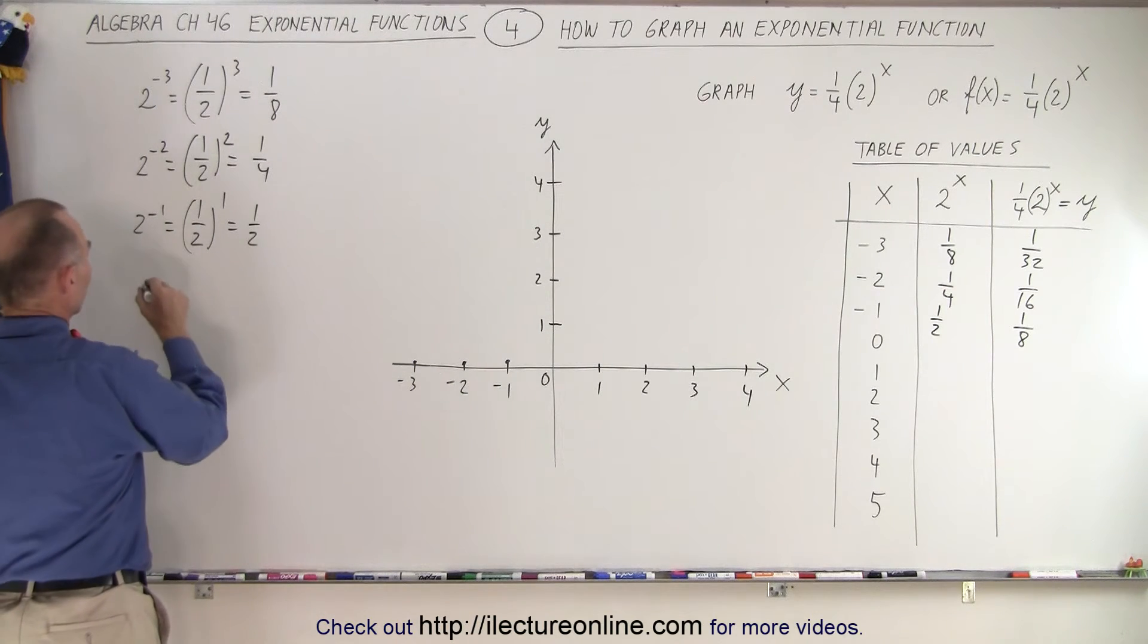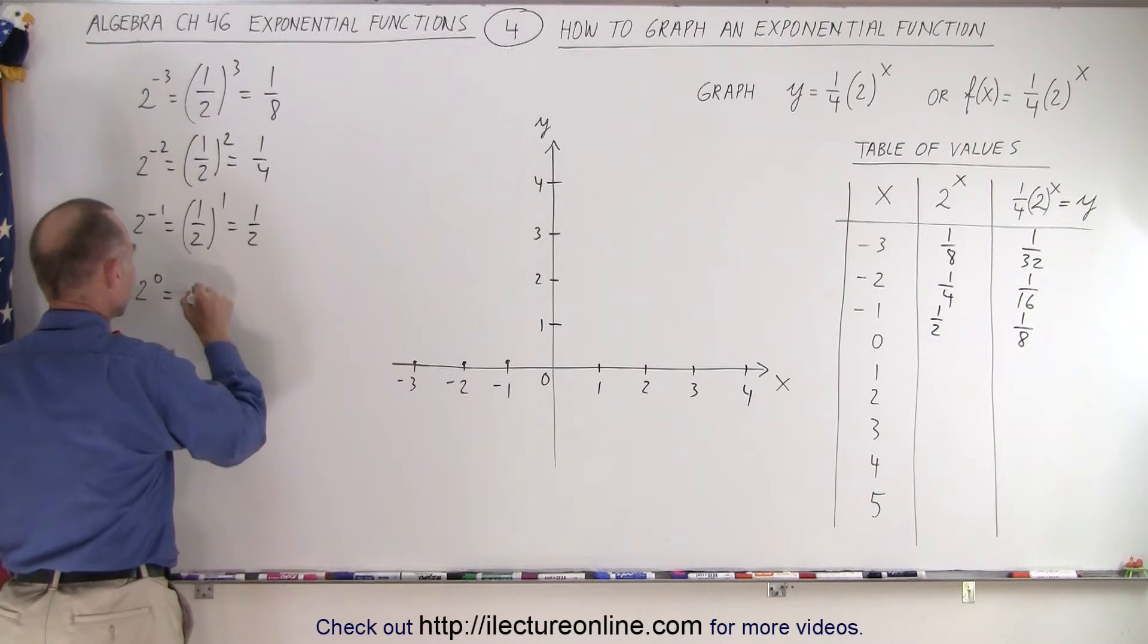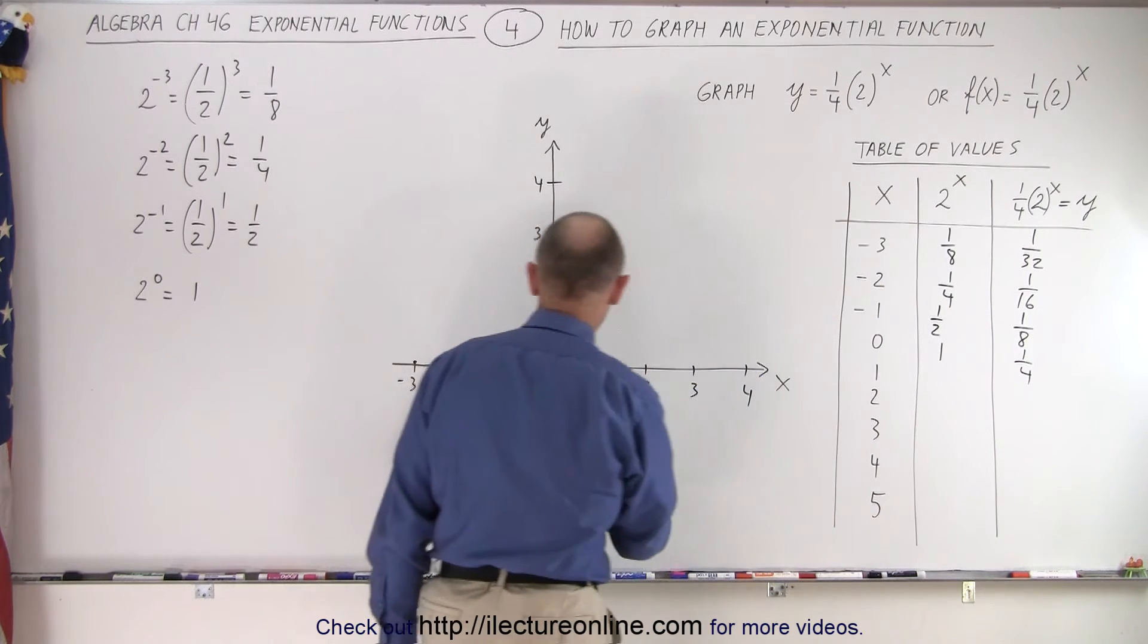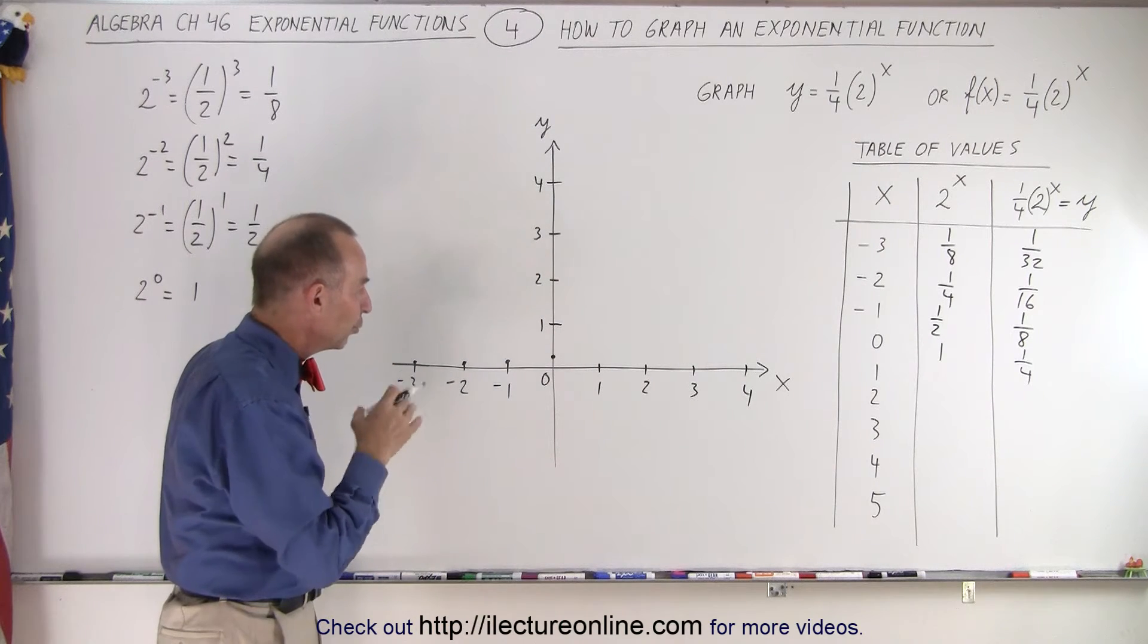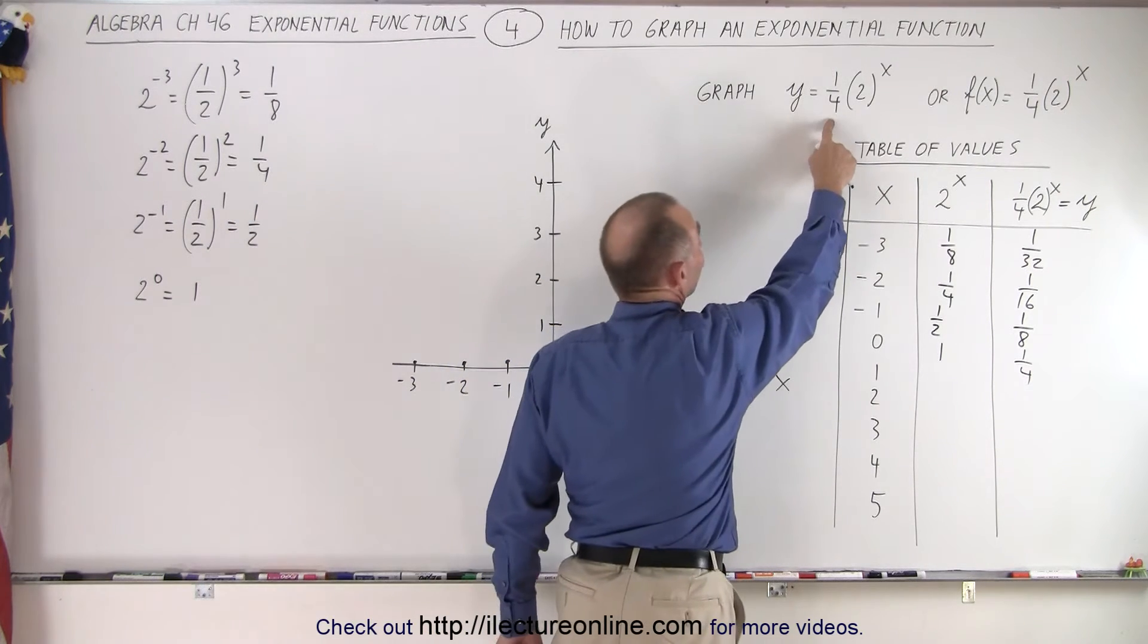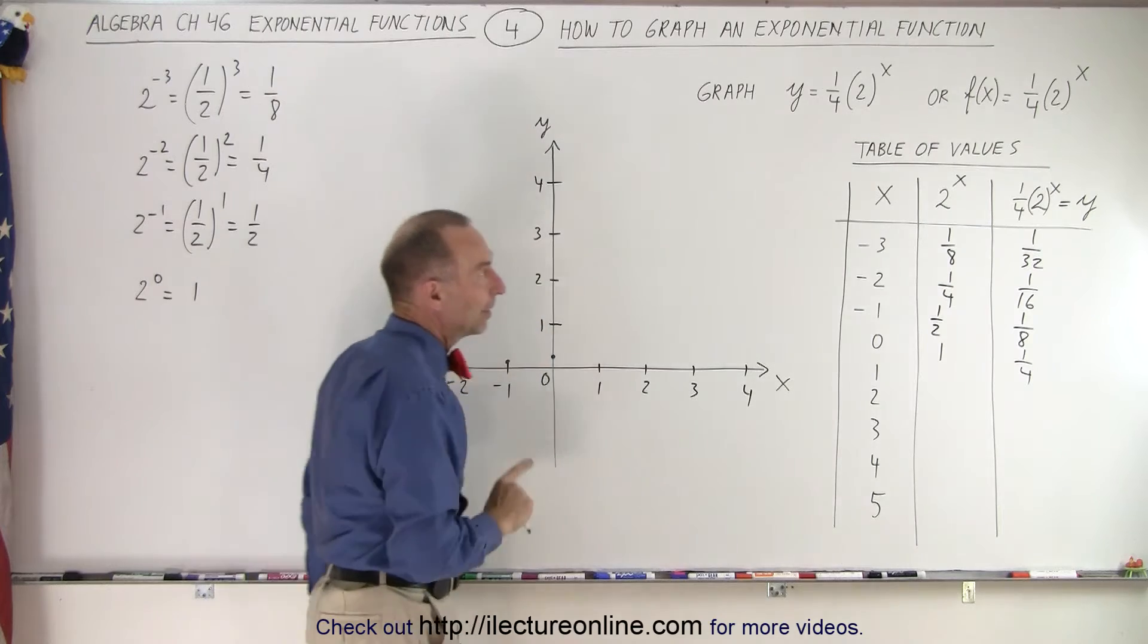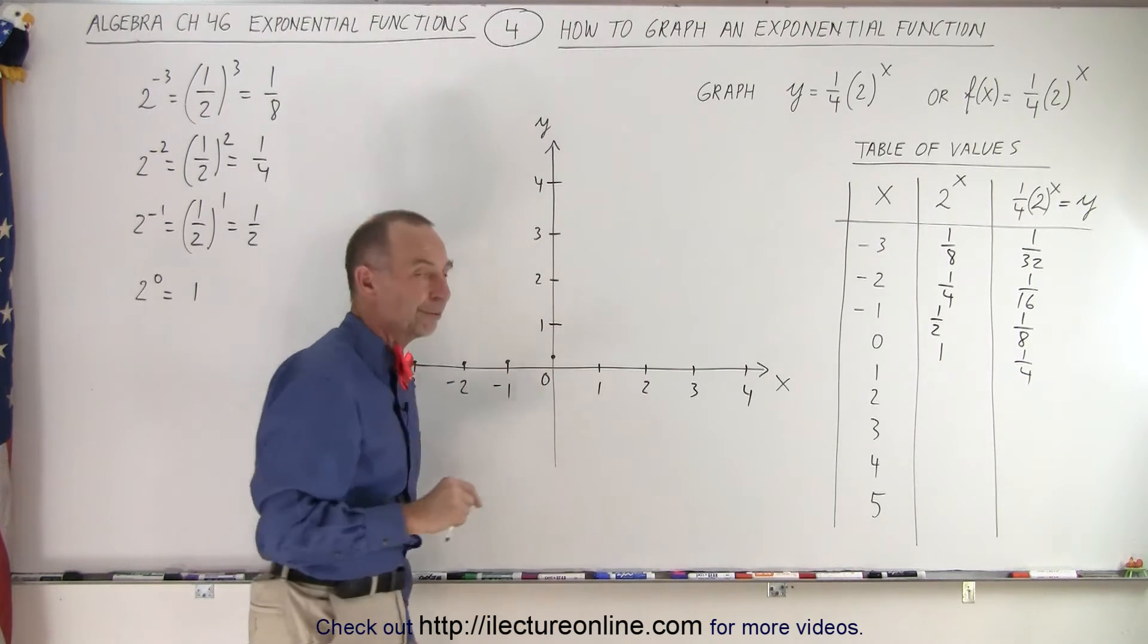How about when x equals 0? 2 to the 0 power is equal to, well, anything to the 0 power is always equal to 1. So that means when x equals 0, 2 to the 0 is equal to 1 times 1 fourth is equal to 1 fourth. So at this point, it's equal to 1 fourth. Now remember a few videos ago when we had 2 to the x power or b to the x power, it doesn't matter what it is. If there's no coefficient in front like this, any constant to the x power when x becomes 0 will be equal to 1. So normally the function will go through 1, except in this case it's all multiplied by 1 fourth. So instead of 1, we only get 1 fourth at that point.